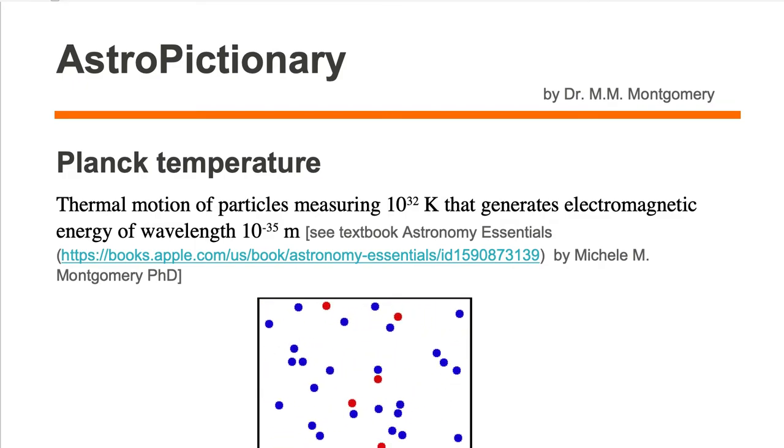Planck temperature is thermal motion of particles measuring 10 to the 32 Kelvin that generates electromagnetic energy of wavelength 10 to the minus 35 meters. This value of 10 to the 32 Kelvin is known as the Planck temperature.